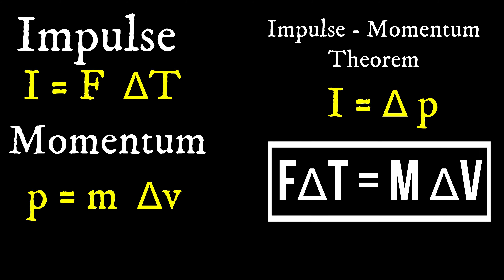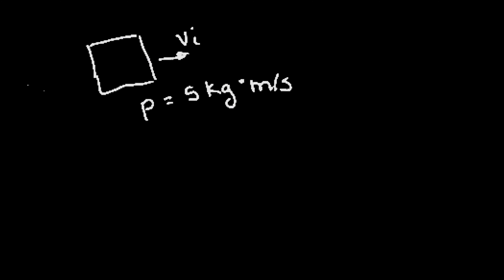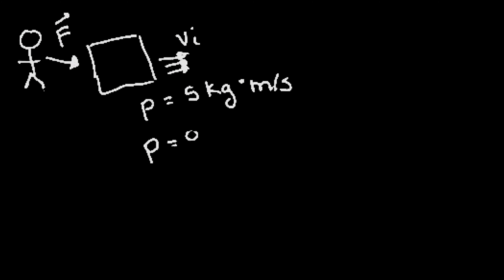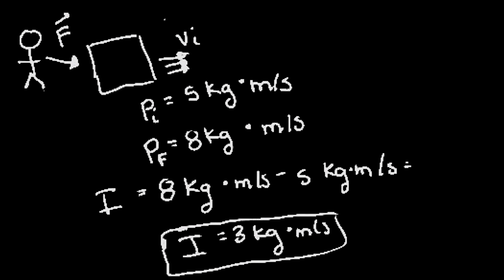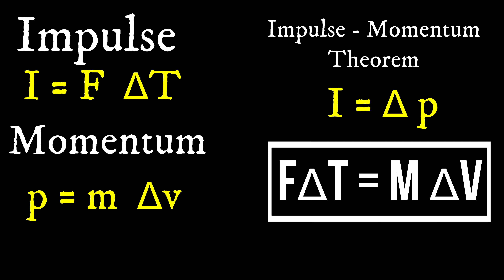From this we get the impulse-momentum theorem: impulse equals the change in momentum. For example, imagine a box moving with a momentum of 5 kg·m/s. If I push the box — applying an external force — the momentum changes from 5 kg·m/s to 8 kg·m/s. The impulse equals the change in momentum: 8 kg·m/s minus 5 kg·m/s, so the impulse is 3 kg·m/s.